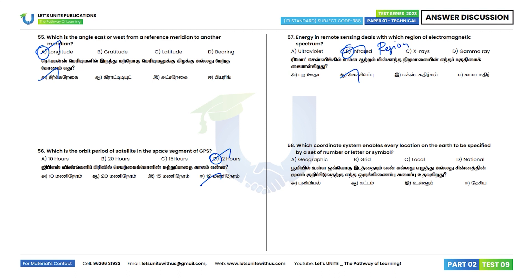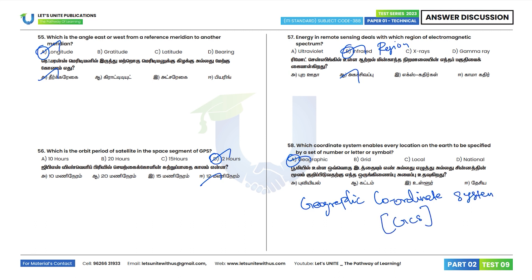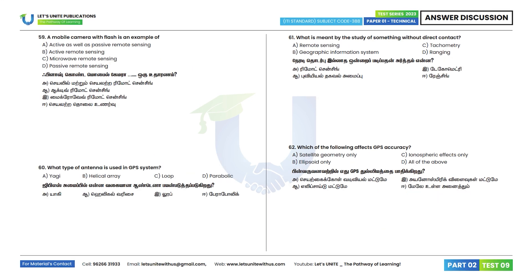Question 58: Which coordinate system enables every location on the Earth to be specified by a set of numbers, letters, or symbols? The correct answer is the geographic coordinate system. Question 59 answer: GPS uses a helical antenna arrangement. Option B.